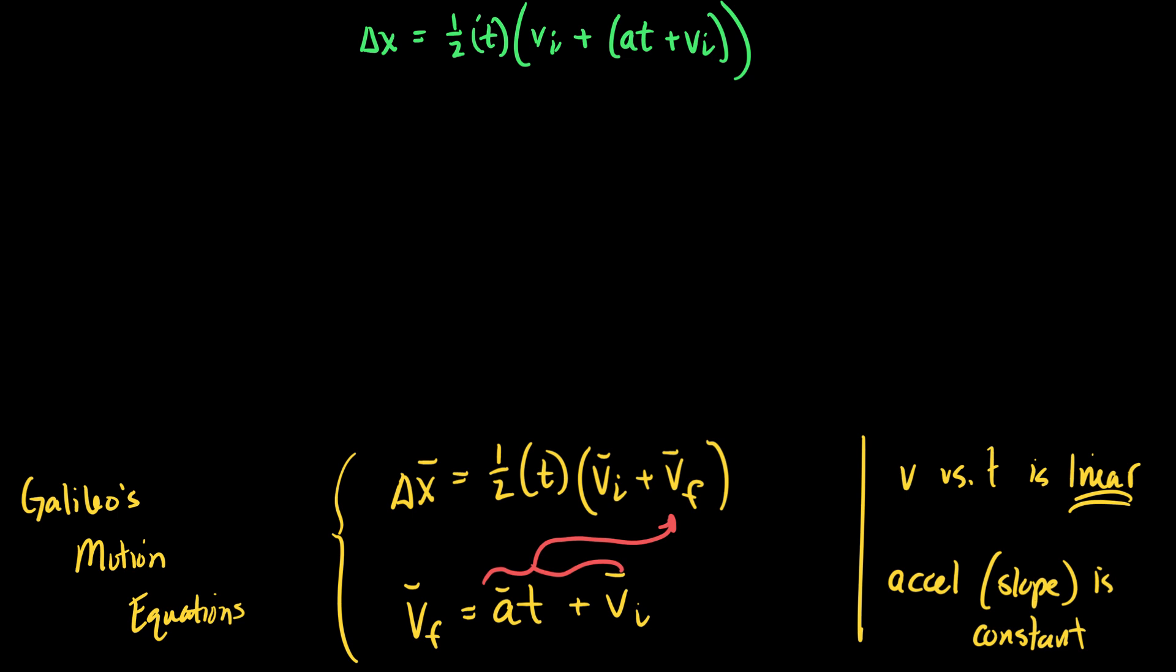Now, we could clean this up. We could expand this and collect like terms. I would encourage you to do so. I will show you what I mean by that. I'm going to distribute the one-half t. So I'll get one-half vi times t plus one-half at squared plus one-half vi times t. I just did the distributive property. Everybody okay with that? I have two like terms that I can add together. One-half vi times t plus one-half vi times t. So I will collect them.